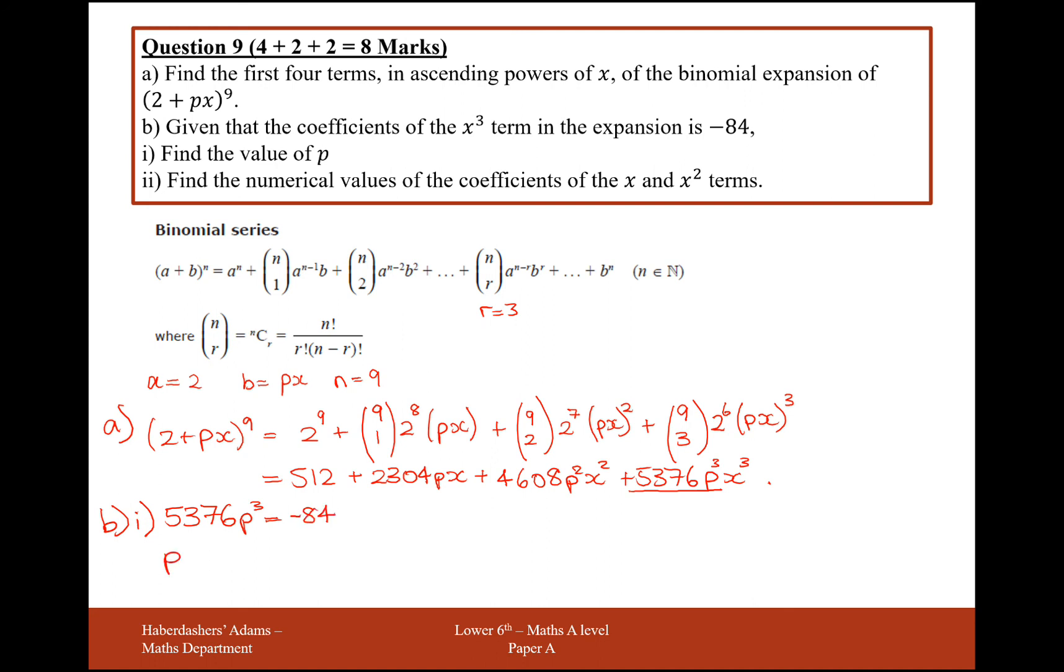So, p cubed is going to be minus 84 divided by 5,376, which will give us on the calculator minus 1 over 64. So, therefore, p is going to equal minus a quarter.